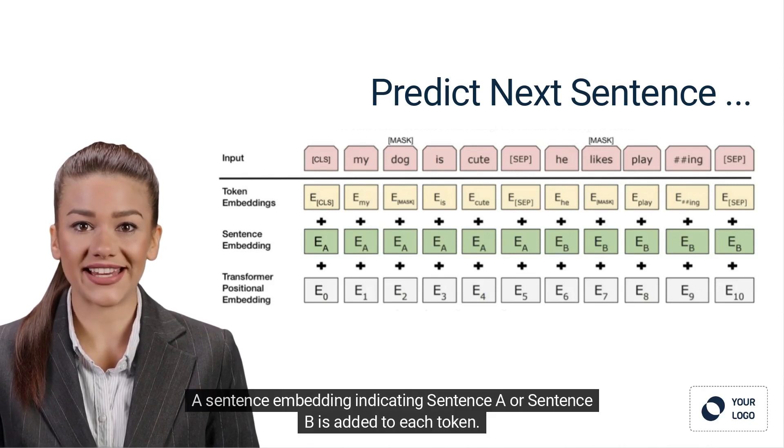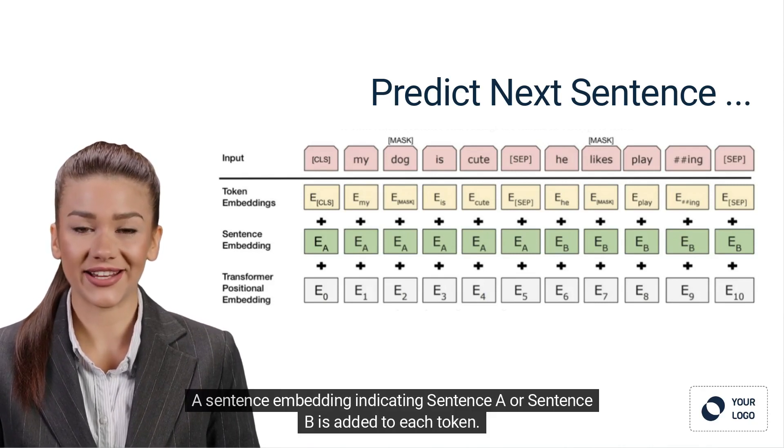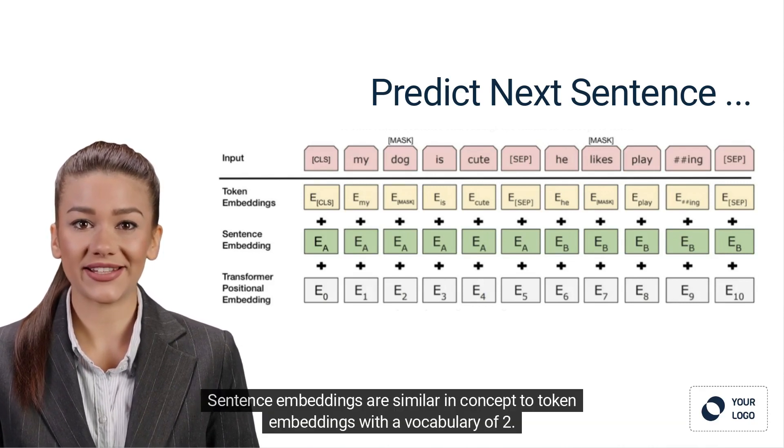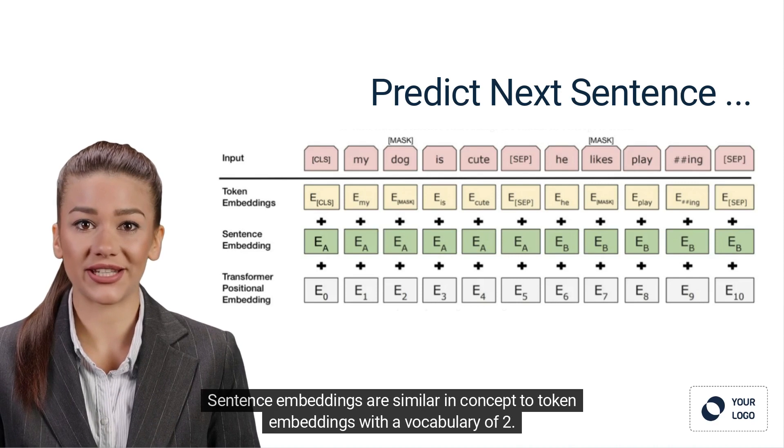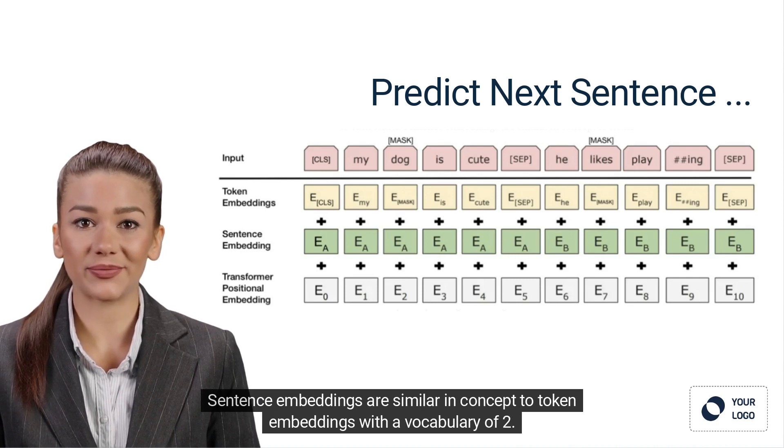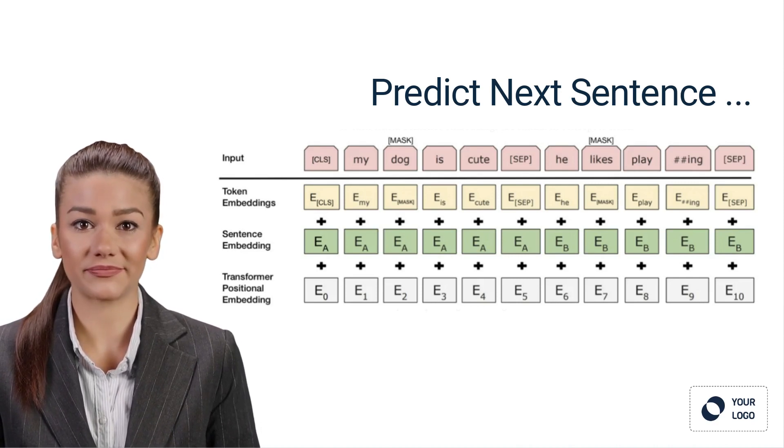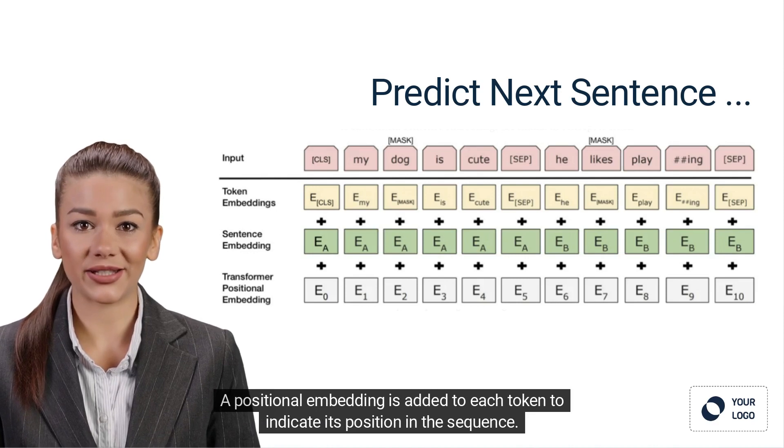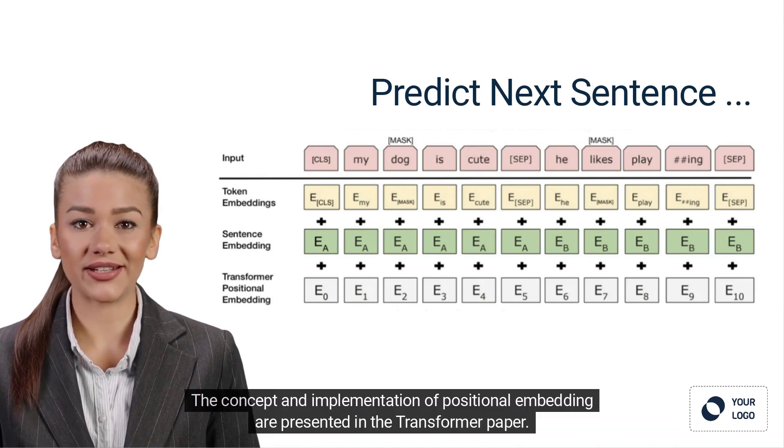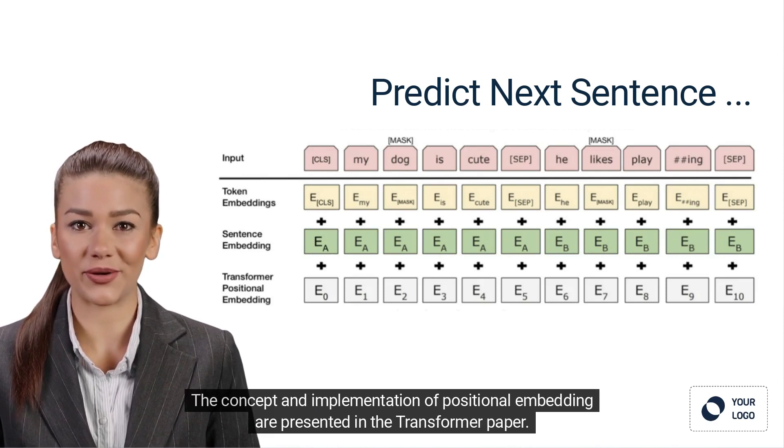2. A sentence embedding indicating sentence A or sentence B is added to each token. Sentence embeddings are similar in concept to token embeddings with a vocabulary of 2. 3. A positional embedding is added to each token to indicate its position in the sequence. The concept and implementation of positional embedding are presented in the Transformer paper.